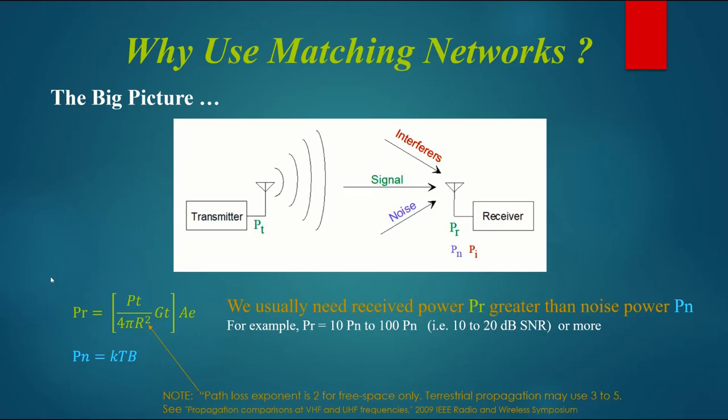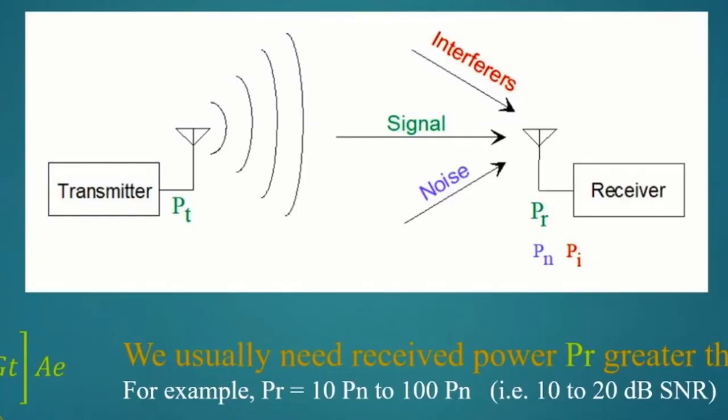The equations for the received power and the noise power are down here. In order to receive the signal well, we need PR, the received power, to be greater than the noise power. For example, 10 to 100 times the noise power level. Exactly how much depends on the modulation type and some other factors. But the point is, the noise sets a lower bound on the amount of signal that we actually have to get into the receiver, and it's based on a power basis.